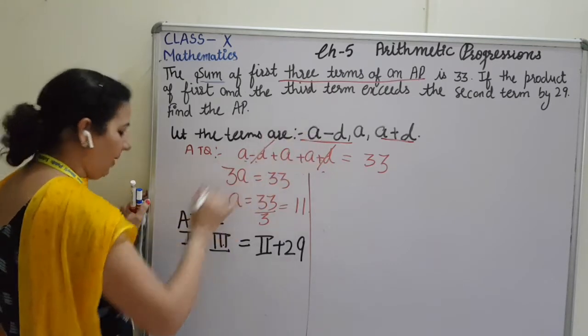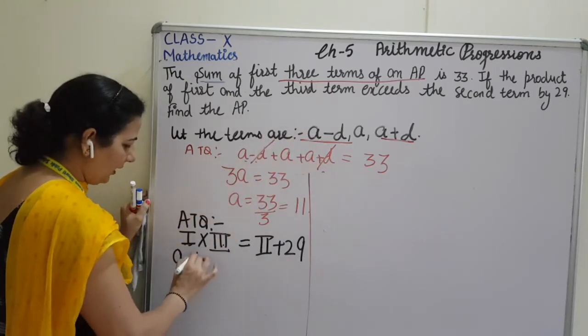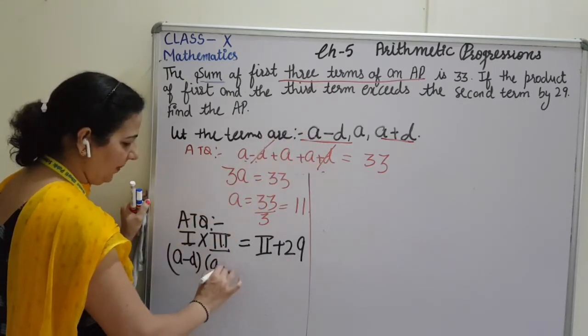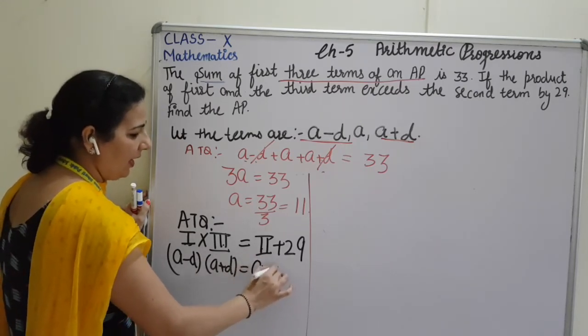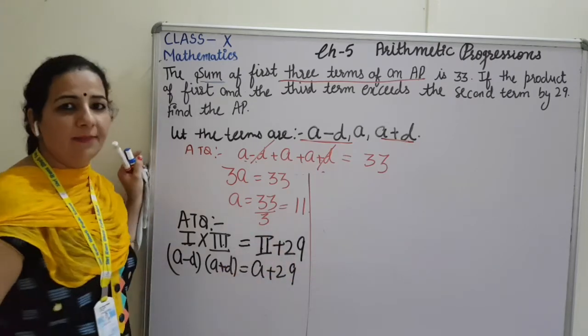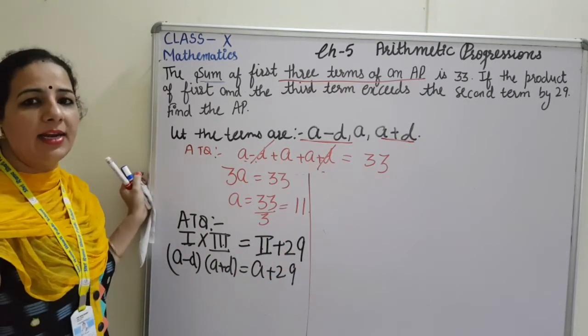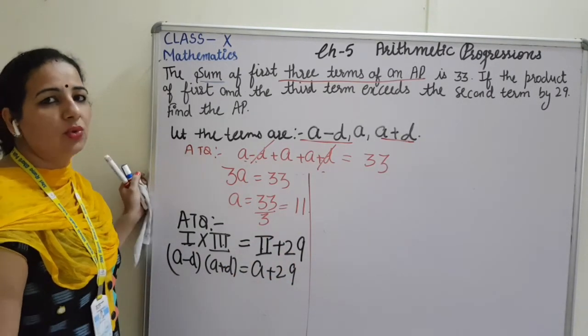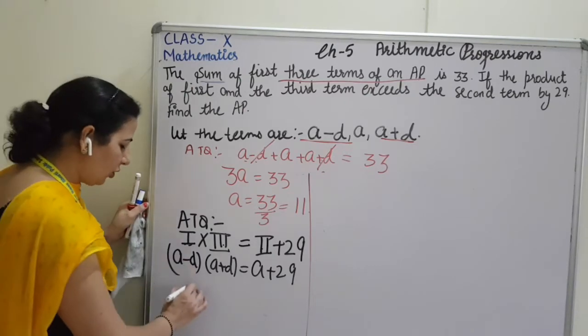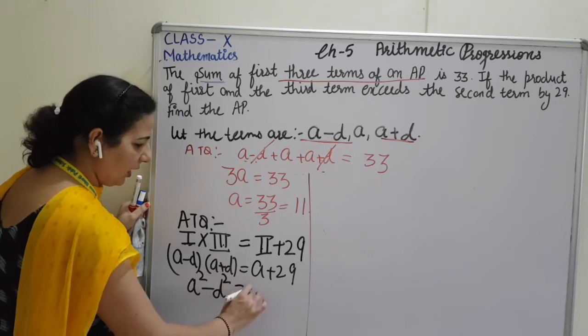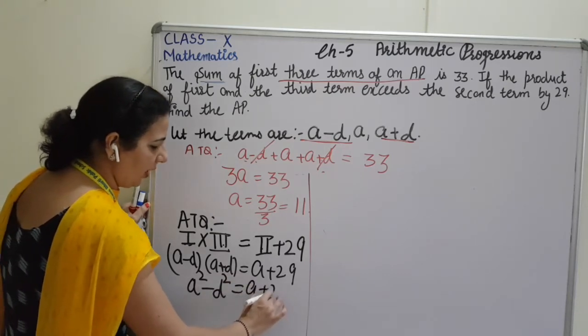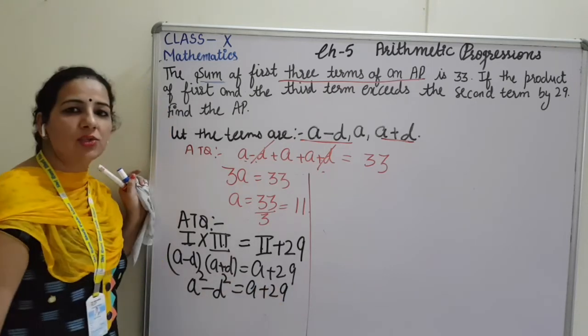So, first term is A minus D, and the third term is A plus D. It is equals to second term is A, and 29 means 29. We all know that A minus B and A plus B is equals to A square minus B square. So, here I can apply that identity. A square minus D square is equals to A plus 29.